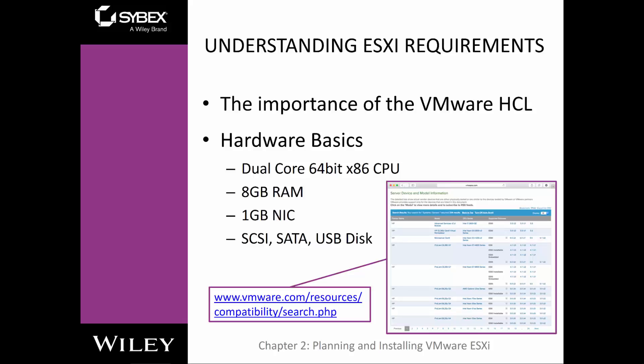You want to make sure what servers connect to what, so you have a full understanding of exactly what hardware you can use. For basic ESXi hardware, you normally want a dual-core chip, preferably 64-bit — even 32-bit will work, but 64 is better. You want a minimum of 8 gigs of RAM, at least a 1-gigabit NIC, and some type of fast storage. It doesn't have to be centralized storage, it just has to be storage.